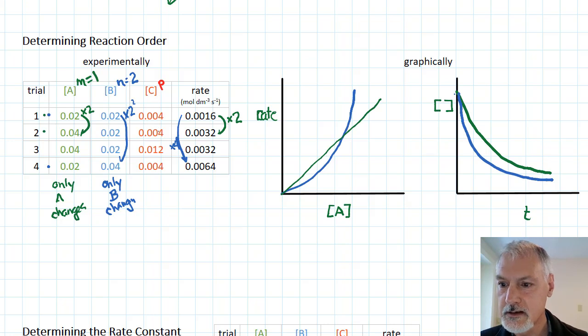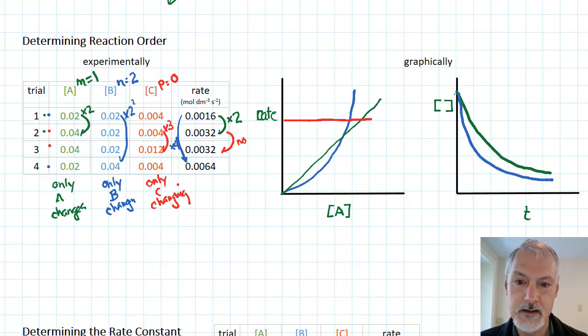And finally here, in substance C, I want only C to be changing. So again, I'm going to try to examine what that would be, and I would think it looks like comparing two with three, because A is the same, B has remained the same, but I can see here a tripling of the concentration. And if I look at the rates, no change. So that no change that occurs tells me that the exponent then for C is zero.